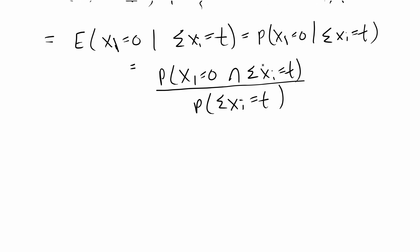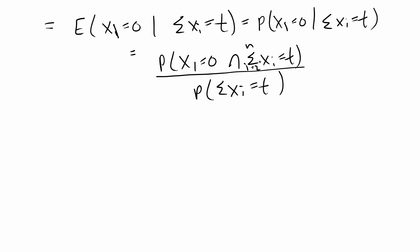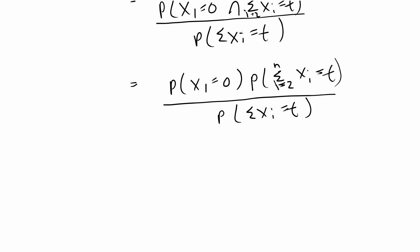Given independence, the sum index should run from i=2 to n. So if we know that x1 is equal to zero, then the sum from i=2 to n — the rest of the xi's — has to equal t, because the total sum must equal t and the first value is zero. With independence, the joint equals the product of the marginals, so we simplify to P(x1=0) times P(sum from i=2 to n of xi = t), over P(sum of all xi = t).